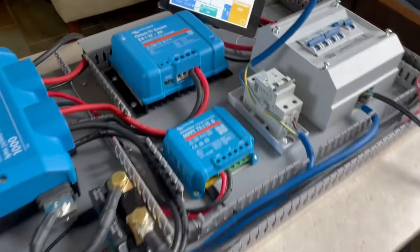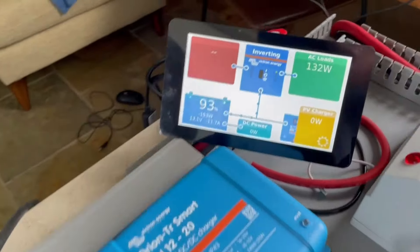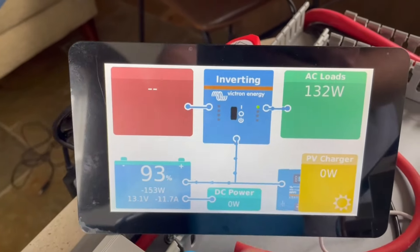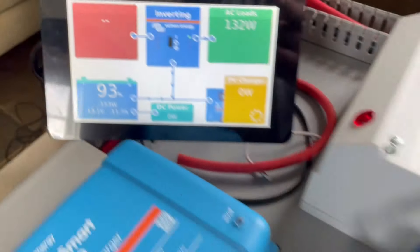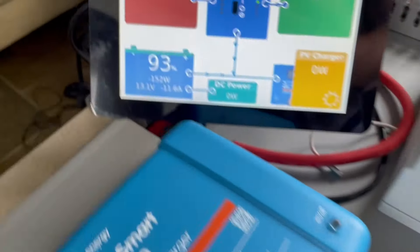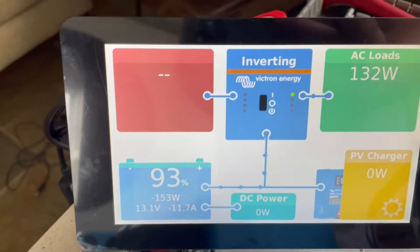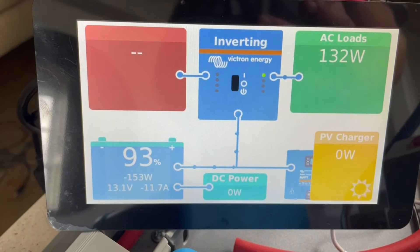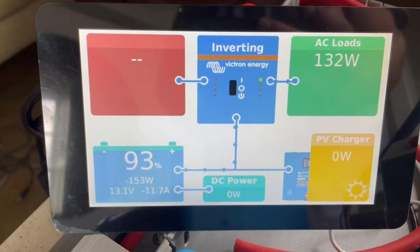At the moment, mains shore power is switched off and isolated. The inverter is inverting from the 200 amp hour lithium battery that we've depleted a bit. We charged it to 100% for the test and now we're depleting it. It's been running for quite a long time.